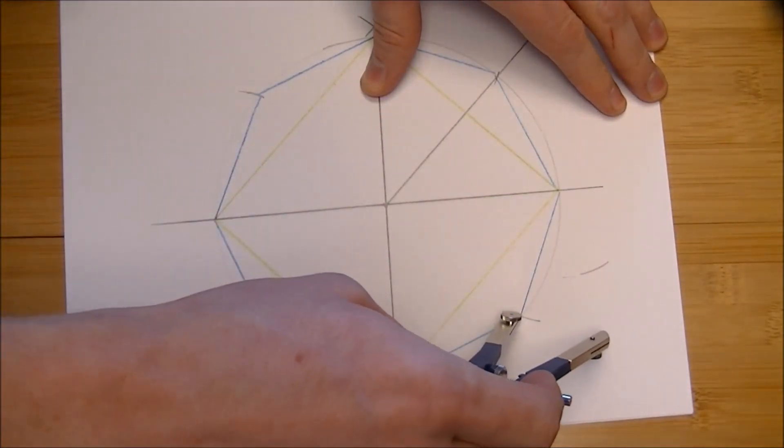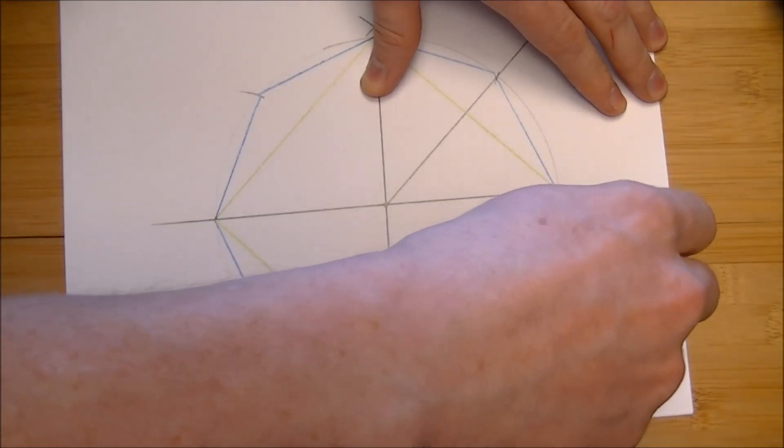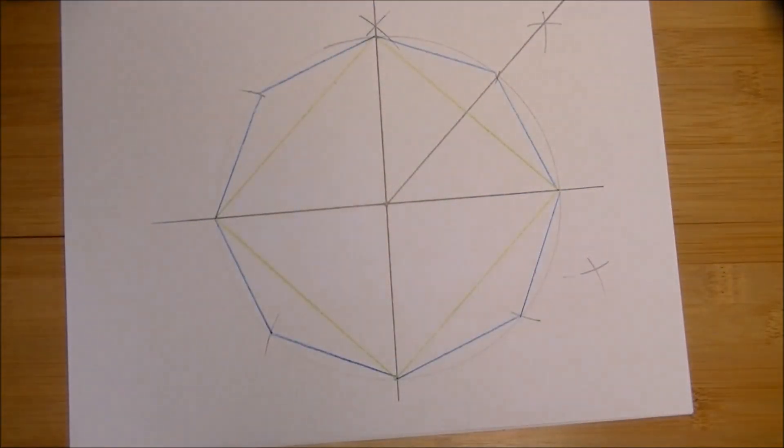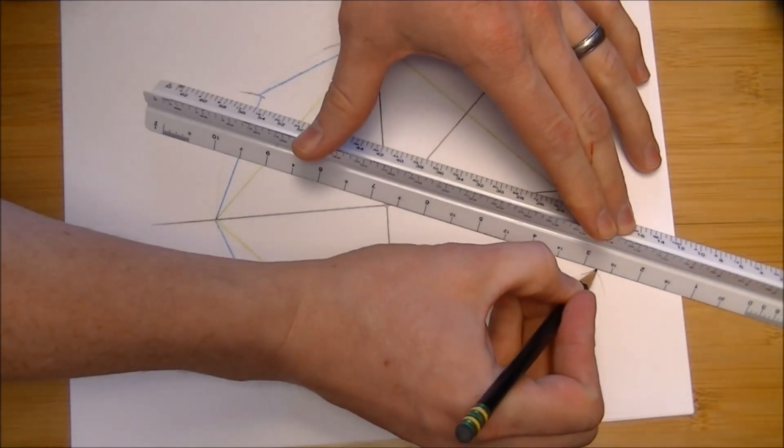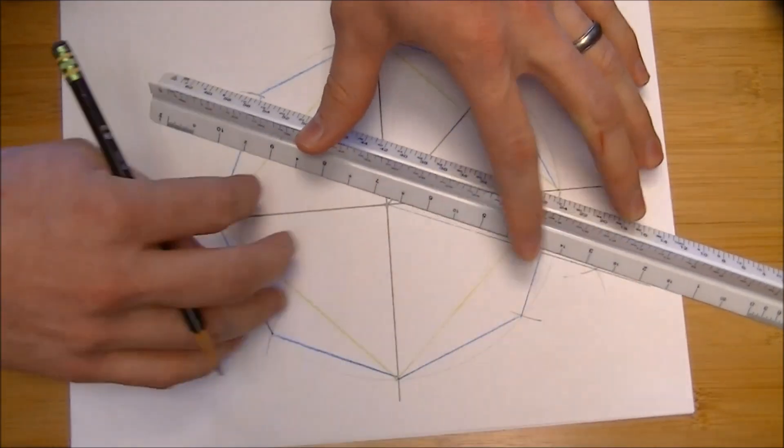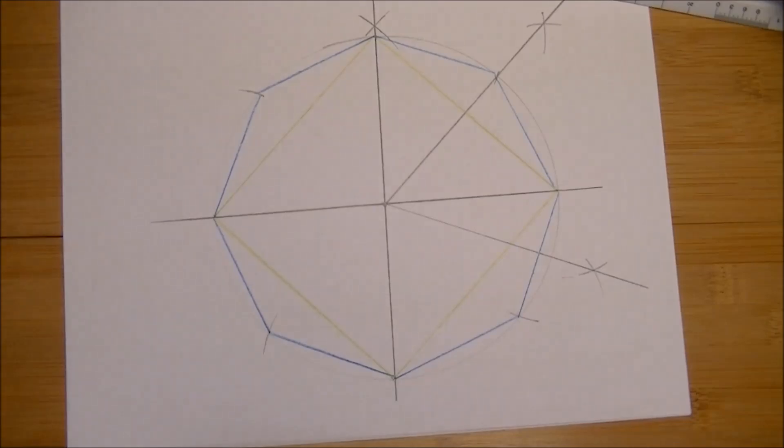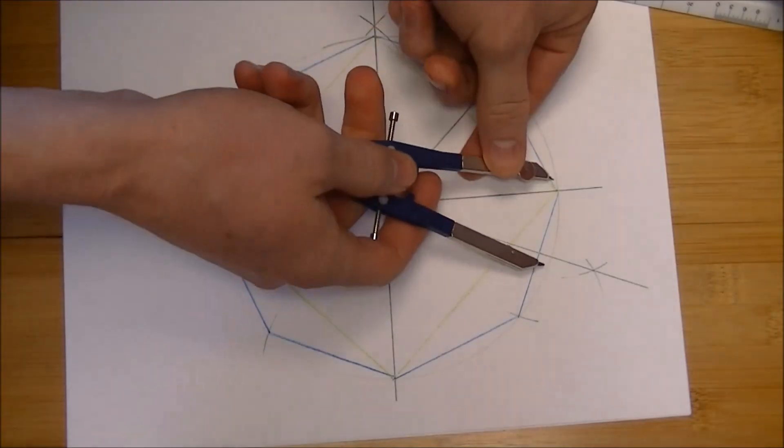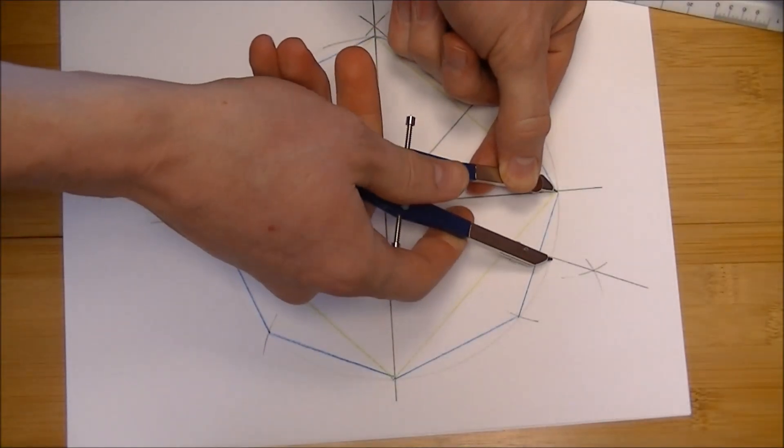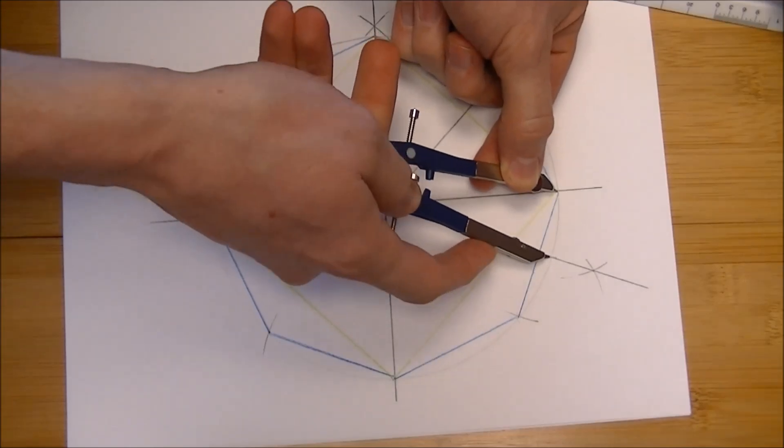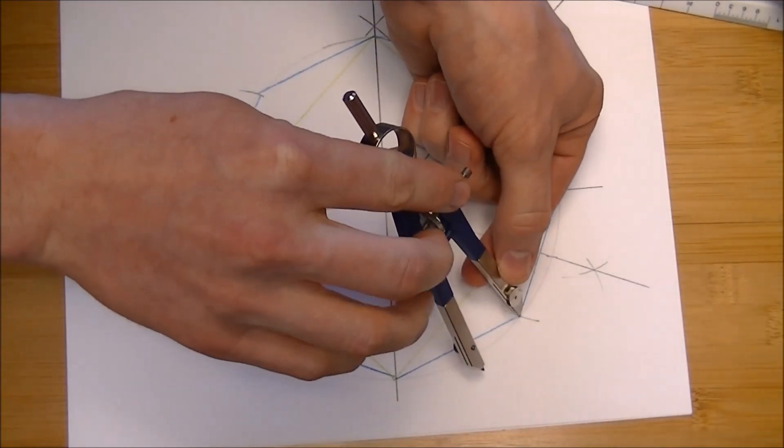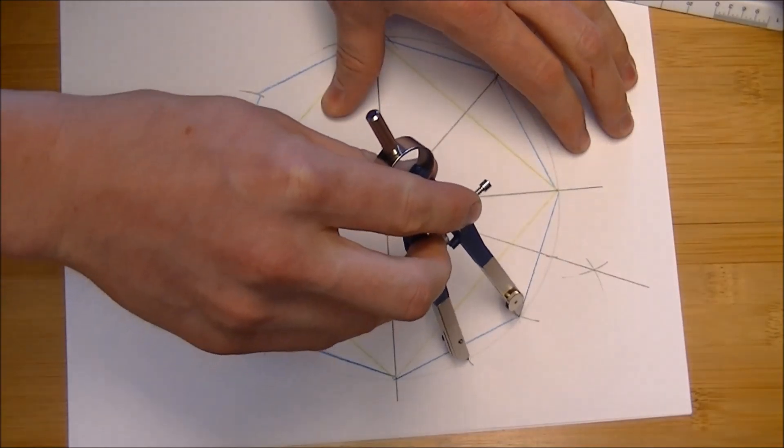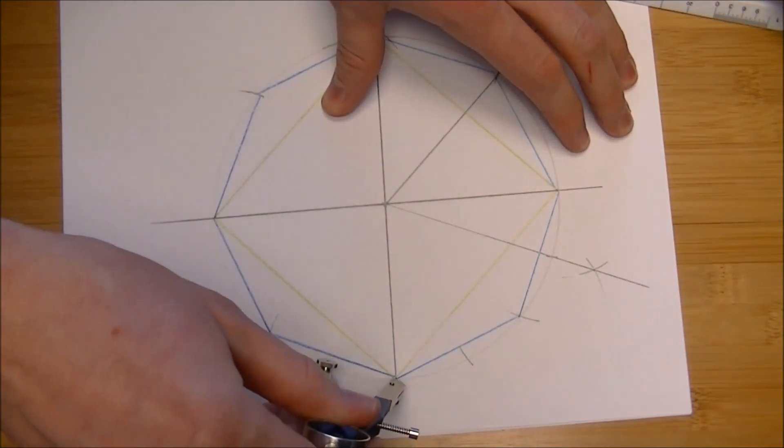So I'll bisect this one because it's kind of out of the way and I don't have to run into anything else. That gives me the length from here to here that I'm going to copy all the way around this circle.